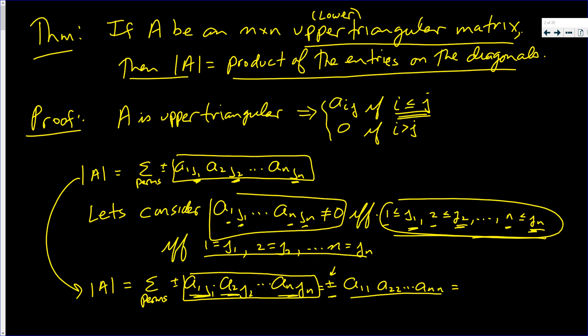We just want the plus. The sign is determined by inversions. Are there any numbers after 1 that are less than 1? No — so no inversions there. Are there any numbers to the right of 2 that are less than 2? No, because to the right of 2 are 3, 4, 5, up to n — they're all bigger. Similarly for 3, and for n there are no values to the right at all. So we keep the plus sign.